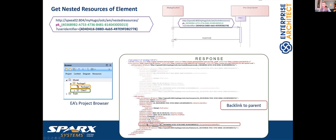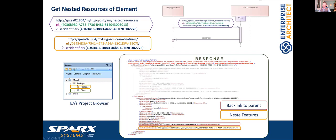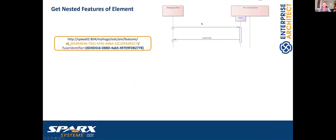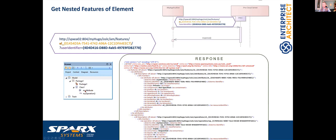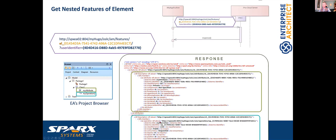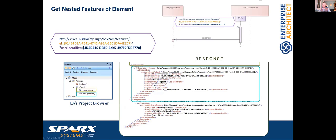Focusing on the element itself, we see the backlink to the resource which contains this element — the package which contains this class — and a link to all the features the class contains. If we follow the link to OSLC AM features with the unique ID and prefix, we get as a response all the attributes and features: an attribute with all attribute information, an operation with all operation information, and a tag value added to this class.